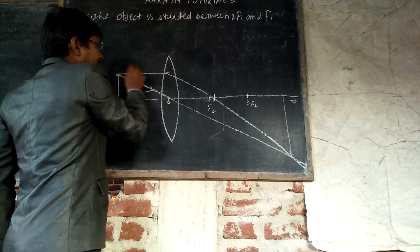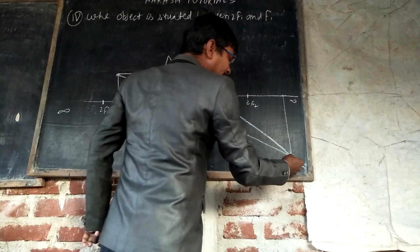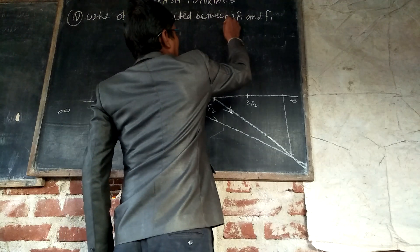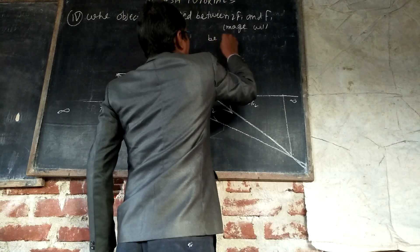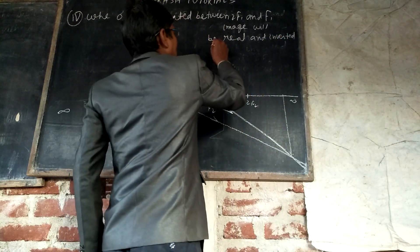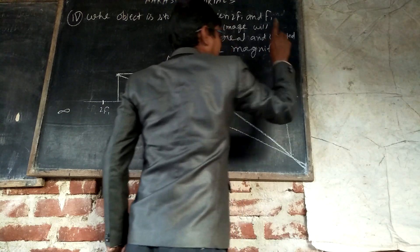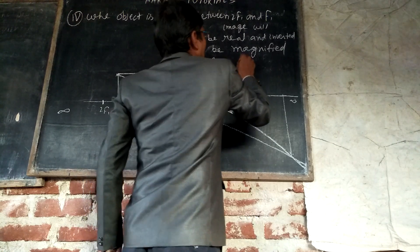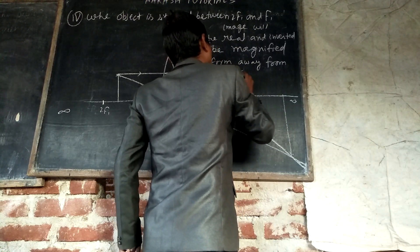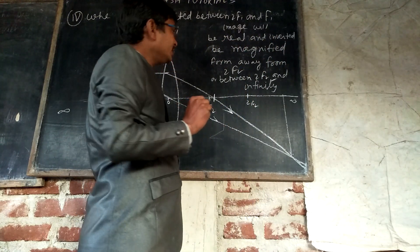Both rays cross each other beyond 2F₂ where the image forms. In this case, the image is real, inverted, and magnified. The image forms between 2F₂ and infinity.